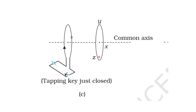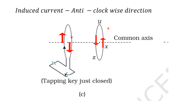Here, this is the primary coil and this is the secondary coil. Both coils are present on the same axis. The tapping key is just closed, so current will be increased and magnetic flux will be increased. See the direction of the current in the primary coil — it is given. Then draw the direction of the current opposite to the primary coil in the secondary coil. This is upward direction, so on the parallel side draw the downward arrow mark; here it should be upward arrow mark. So, the direction of the induced current in the secondary coil is Y, Z, X.